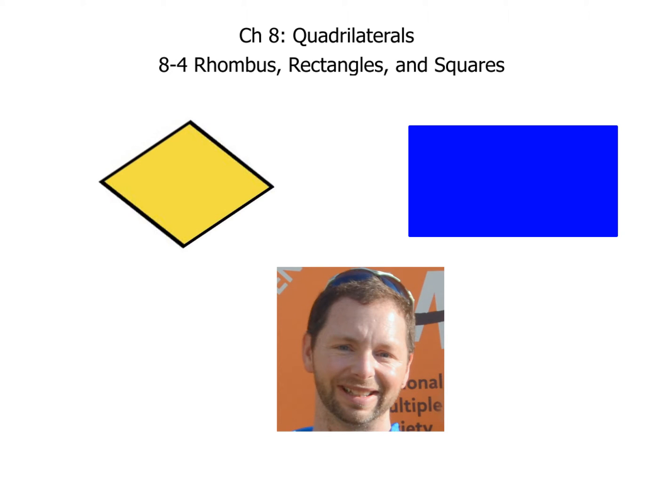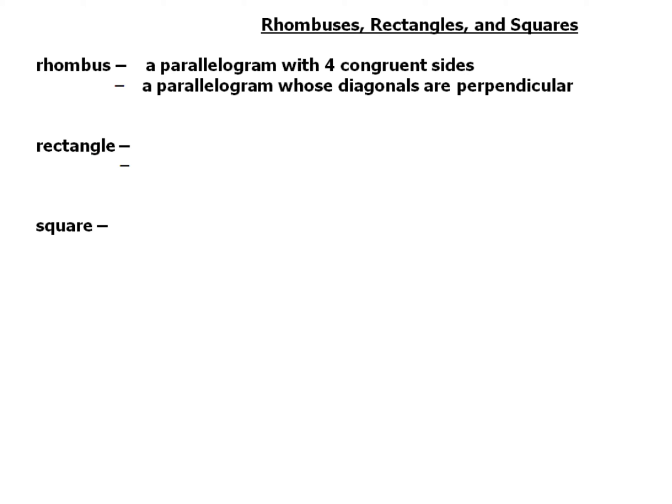We're going to take a look at Section 8.4 about rhombus, rectangle, and squares for our quadrilateral chapter. First thing we need to do is define what these are. A rhombus is a very special shape that has all the characteristics of a parallelogram with four congruent sides.